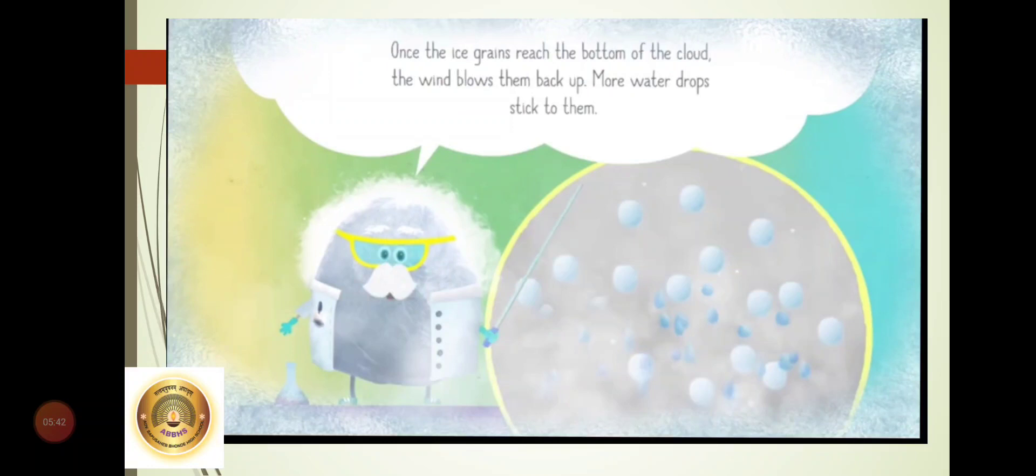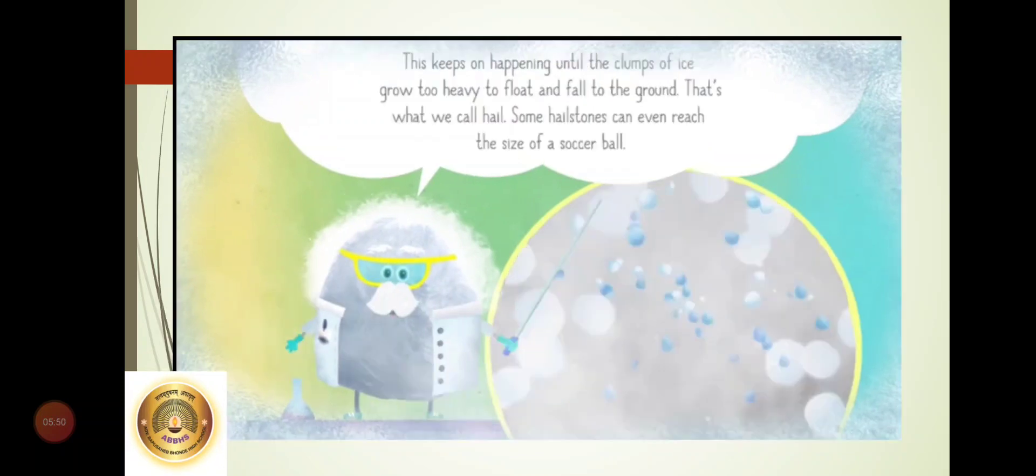Once the grains reach the bottom of the cloud, the wind blows them back upward. More water drops stick to them. Now, this procedure, students, goes on continuing, goes on happening until the clumps of ice grow too heavy to float and fall to the ground. That's what we call as hailing or hail. Some hailstones can reach the size of a soccer ball too.